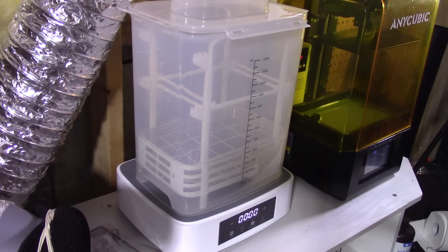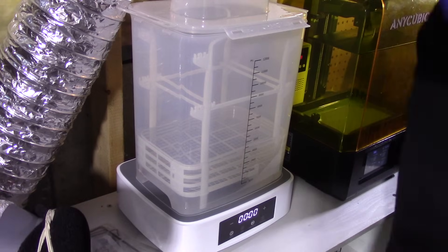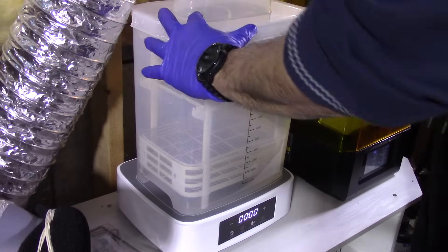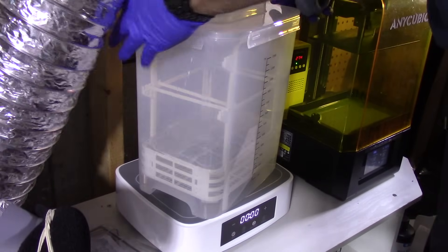Next, set the cure trays on the station. Place the print, put the yellow cover on. Turn the station on, select cure, set the time, and click start. Once it is done, remove it, and that's it.